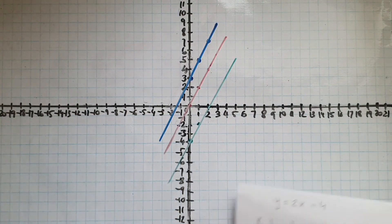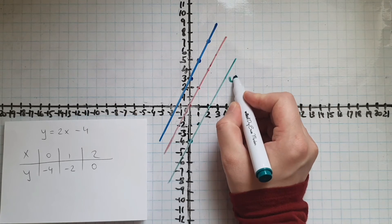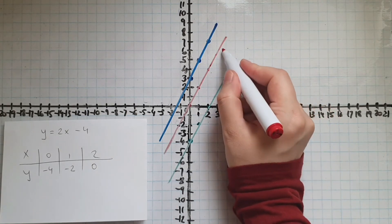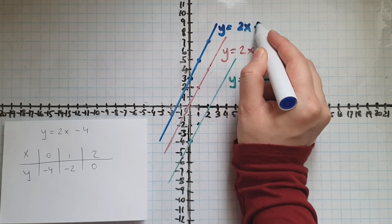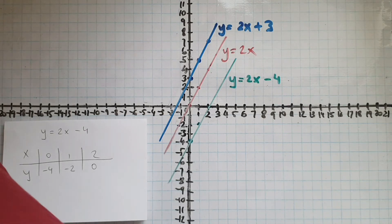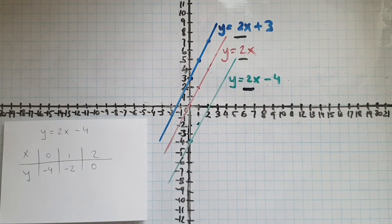So what do you notice about these three lines? I'll add the equations here as well. Are these parallel lines? Yes, they are. Now, what do you notice about them? What do you notice about the gradient, which is the coefficient in front of x? That is 2 in all three cases. So the gradient is the same.